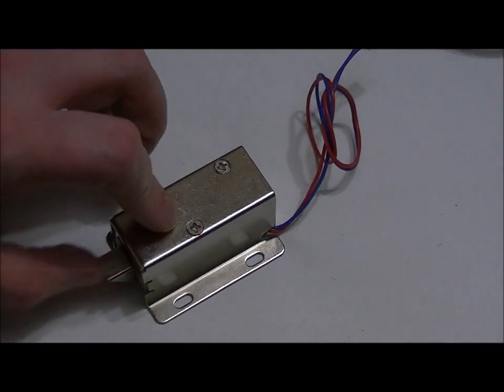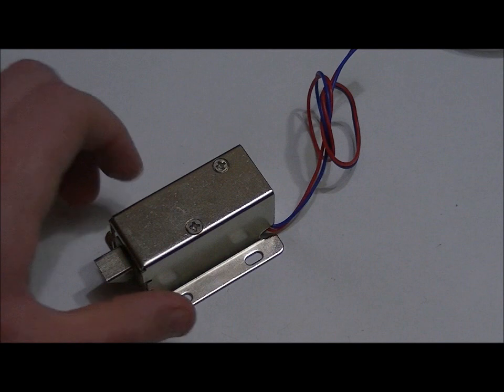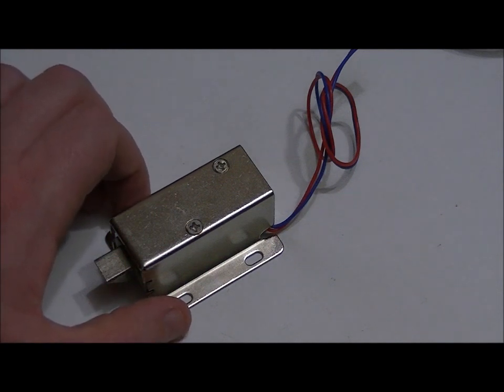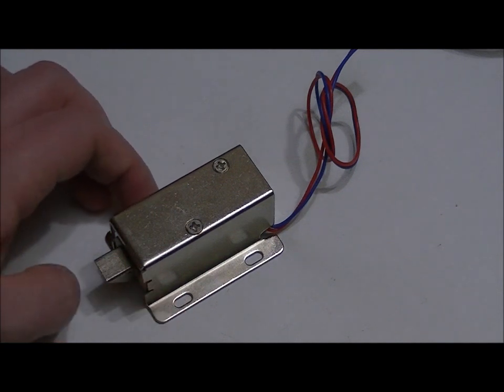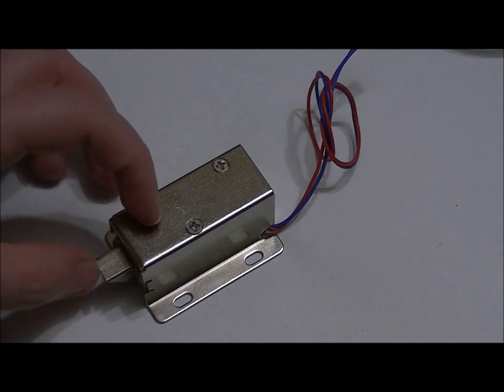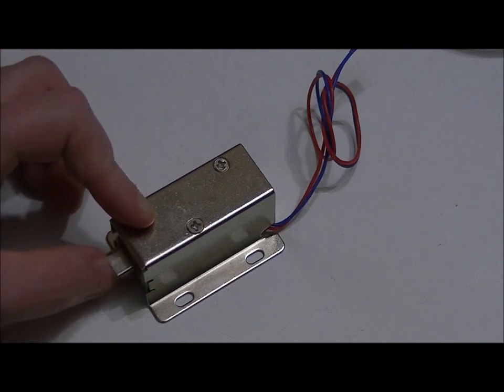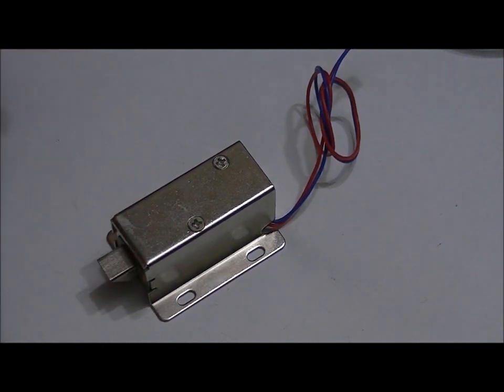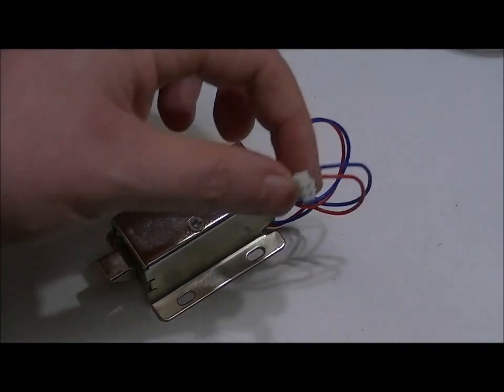The solenoids I have don't come with mounting brackets, but the idea is you make your own. And you can place this in a cabinet or in a door. And by default, the plunger is out. When you apply power, the plunger is pulled in, essentially unlocking.